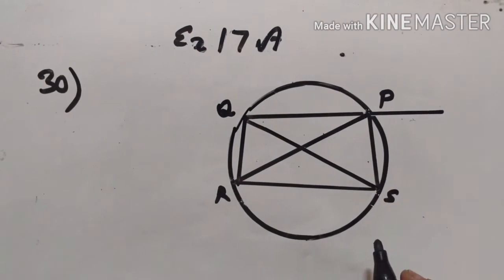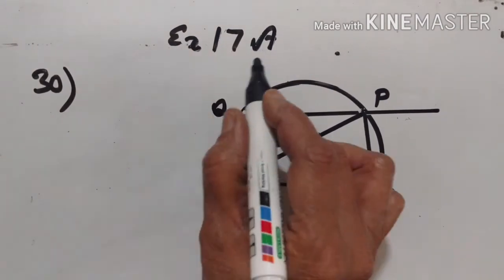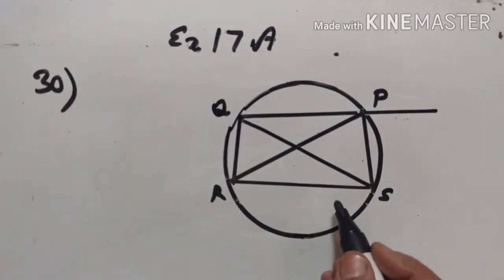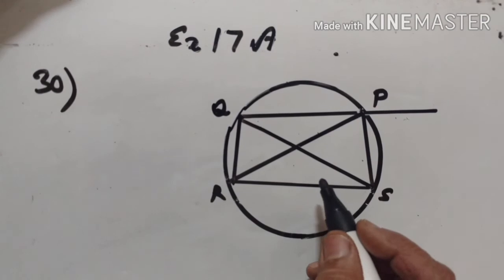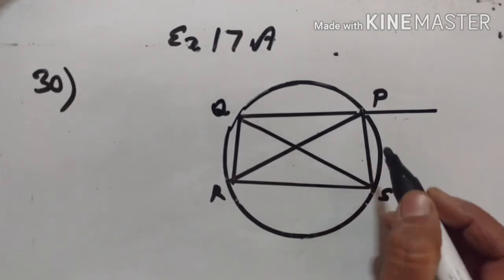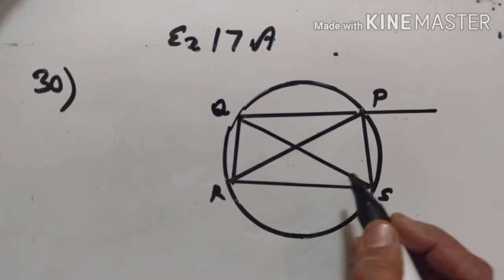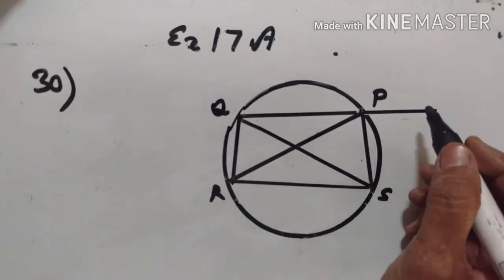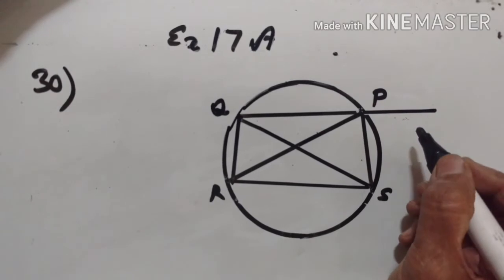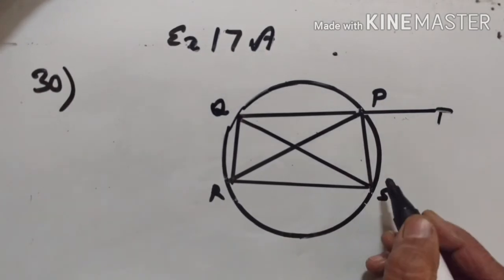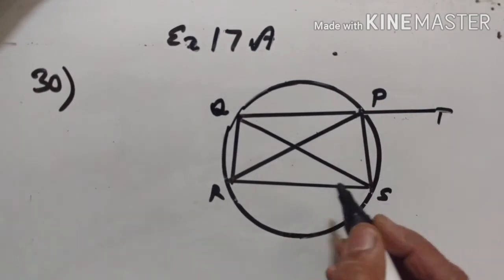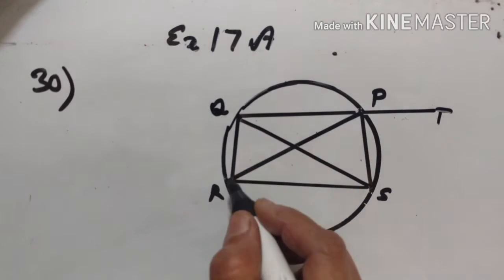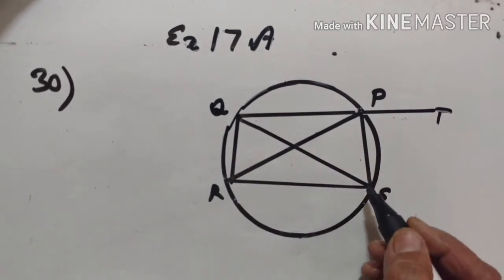Hello students, welcome back. Problem XI 17A, number 30. In this figure, SP is a bisector of angle RPT, and PQRS is a cyclic quadrilateral.